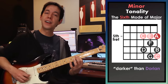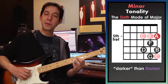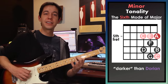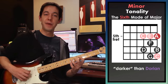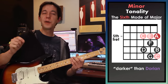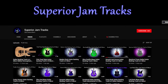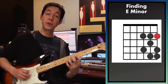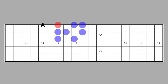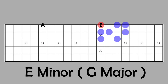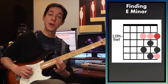Minor is kind of dark, sad, melancholy, a little dramatic. To me it's like the evil twin of Dorian — similar, but a little more depressing. Our jam track from Superior Jam Tracks is in E minor, so the sixth note needs to end up on E. I can do that by sliding this note up to E at the twelfth fret, play the same shape, and I'll be in E minor, focusing on E, G, and B.